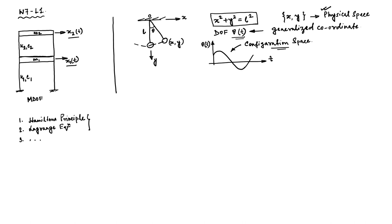These terminologies will be sufficient for now. One point to note: if you look at the constraint condition, it involves x and y only. This type of constraint condition — where a system satisfies an equality constraint involving positions only — we call it a holonomic system. So the constraint conditions are defined by x and y only.